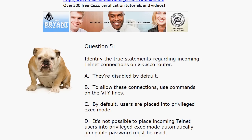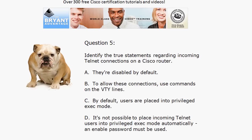Your incoming Telnet connections on a Cisco router — we need to know these, not just for the exams but for the real world, because we use Telnet quite often. Going from top to bottom: they are disabled by default, thankfully, because we don't want just anyone Telnetting to our routers. You are going to configure the virtual terminal lines — the VTY lines — on a Cisco router. You have five lines by default, zero through four. They are not put into privileged exec mode by default; a user is put into user exec mode. To get into enable mode or privileged exec mode, they must enter the enable password if one is set. If one is not set, they can't get into privileged exec mode.